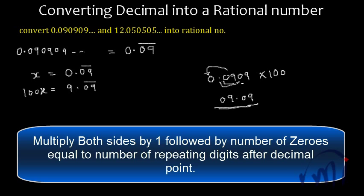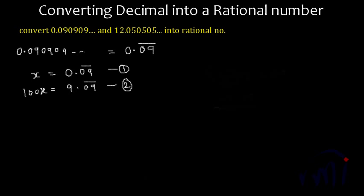Since I want these two digits to be moved towards the left of the decimal point, I have to multiply it by 100. I have to multiply it by 1 followed by two zeros. And that is why I have multiplied this first equation by 100 to get the second equation. And now what I have to do? I will subtract this first equation from the second equation.